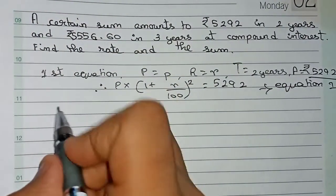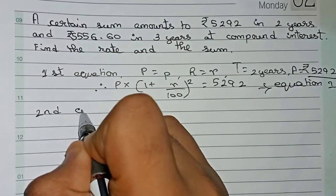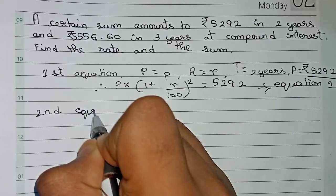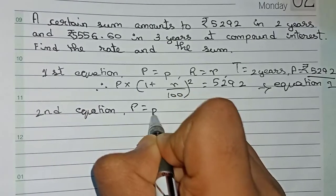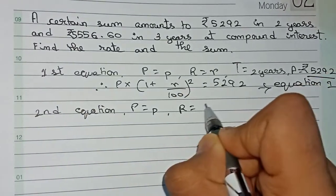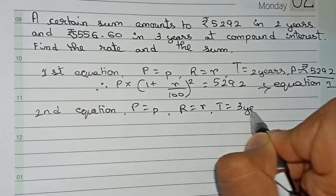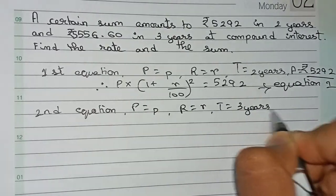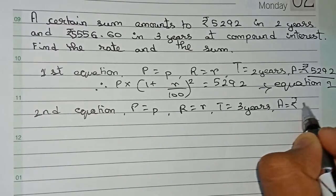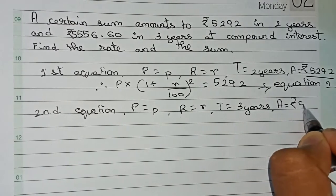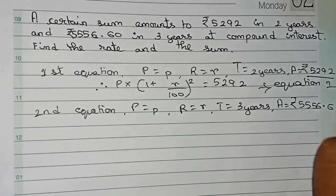Now write equation number 2. Principal is equal to P, rate of interest is also unknown R, time is given as 3 years, and amount is equal to the given value of 5,556.60.